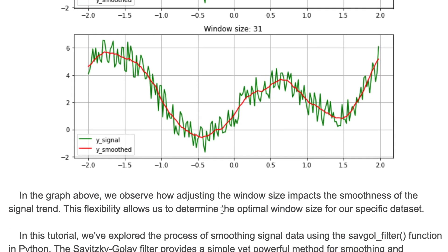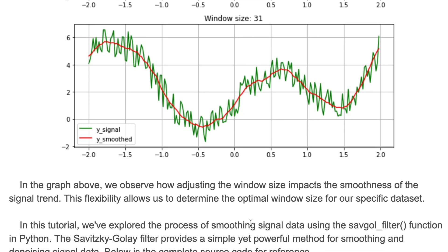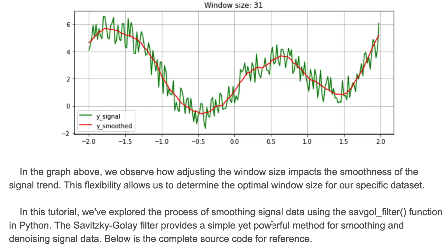In the graph above, we observe how adjusting the window size impacts the smoothness of the signal trend. This flexibility allows us to determine the optimal window size for our specific data set.